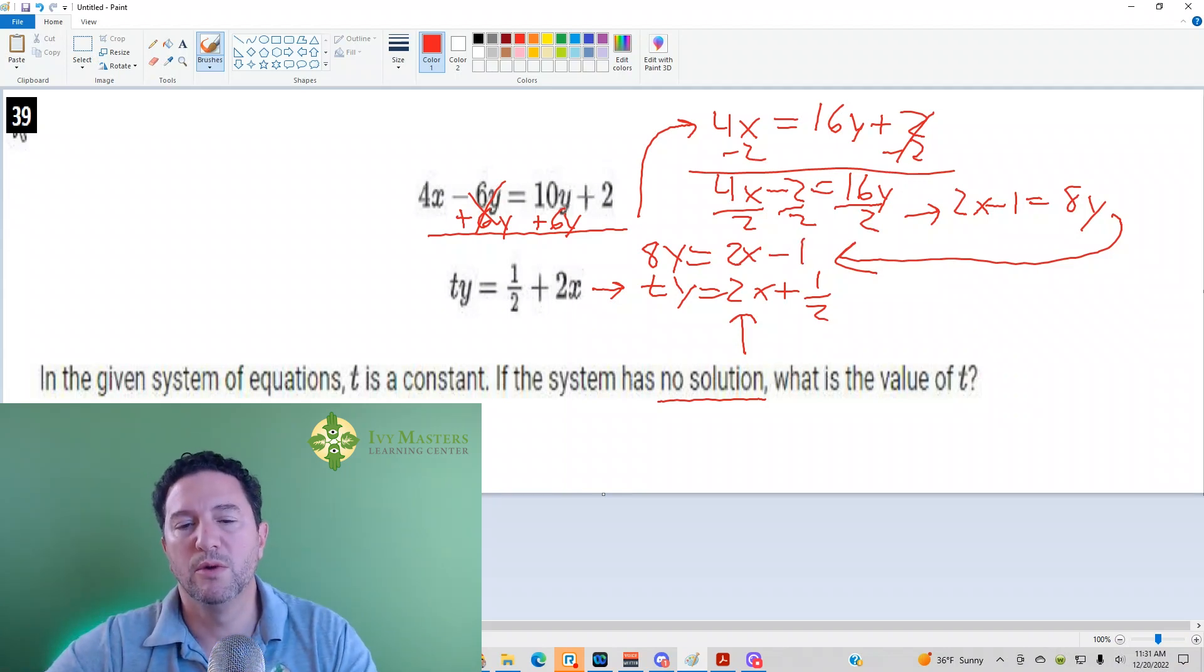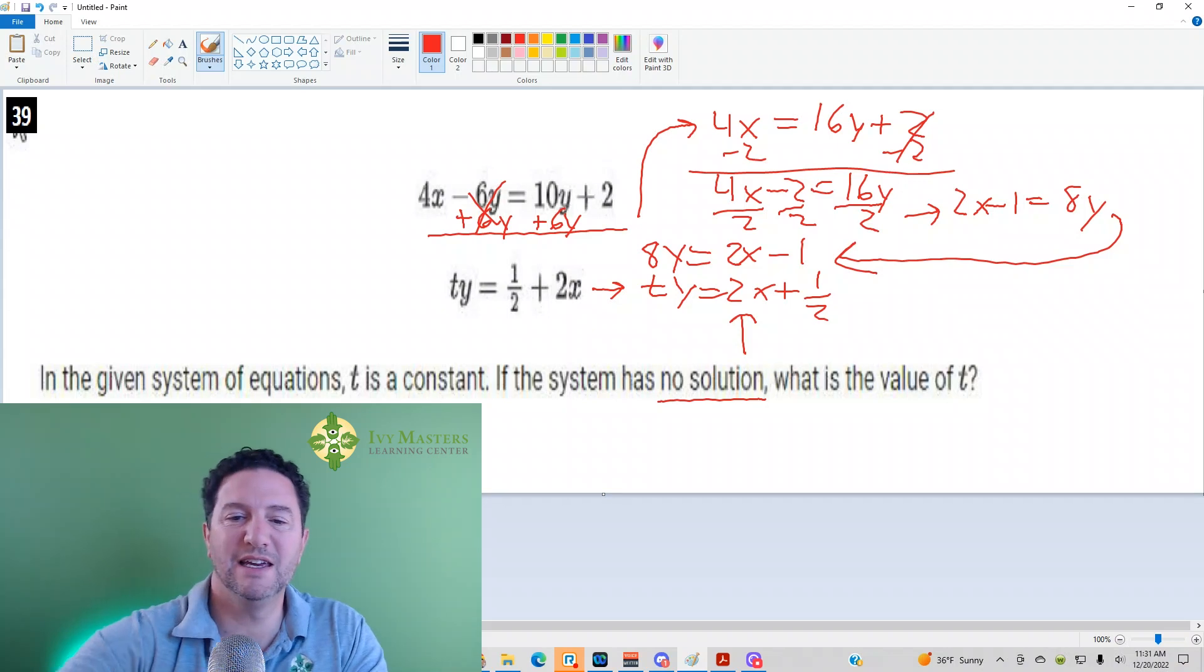So it looks there like we would have different y-intercepts but the same slope. If your t is 8, it corresponds. That's going to be your answer.